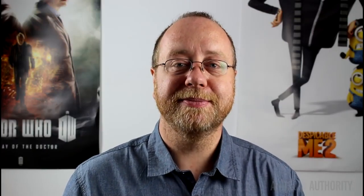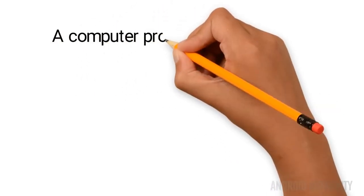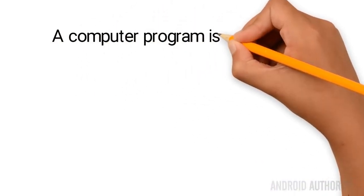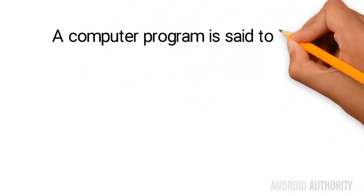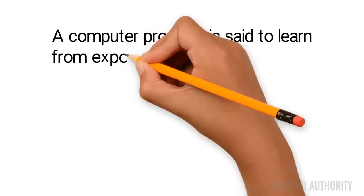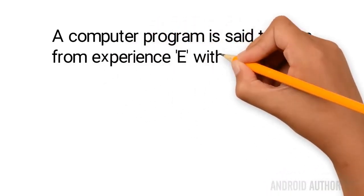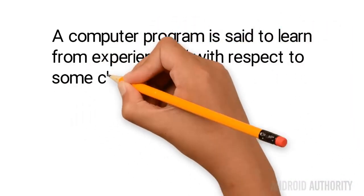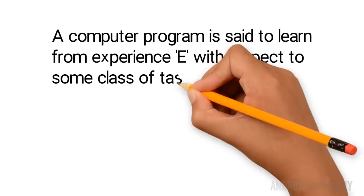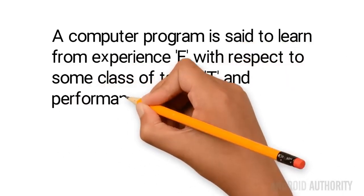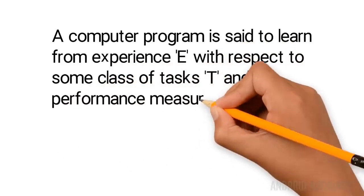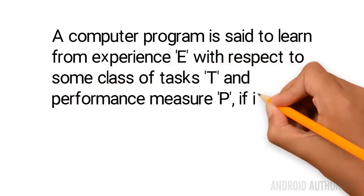Well, why is that? First of all, we need to look at what we mean by machine learning. One of the standard definitions of machine learning, as given by Tom Mitchell, a professor at Carnegie Mellon University, is this: A computer program is said to learn from experience E with respect to some class of tasks T and performance measure P,